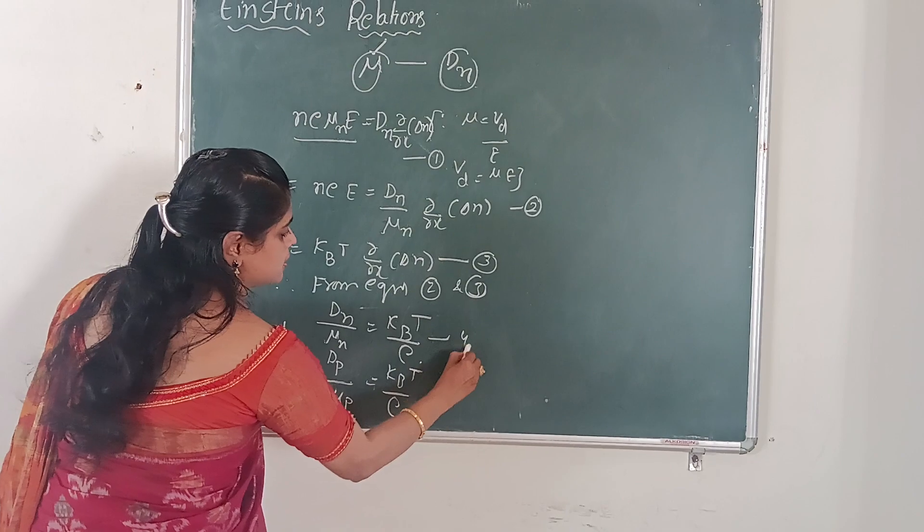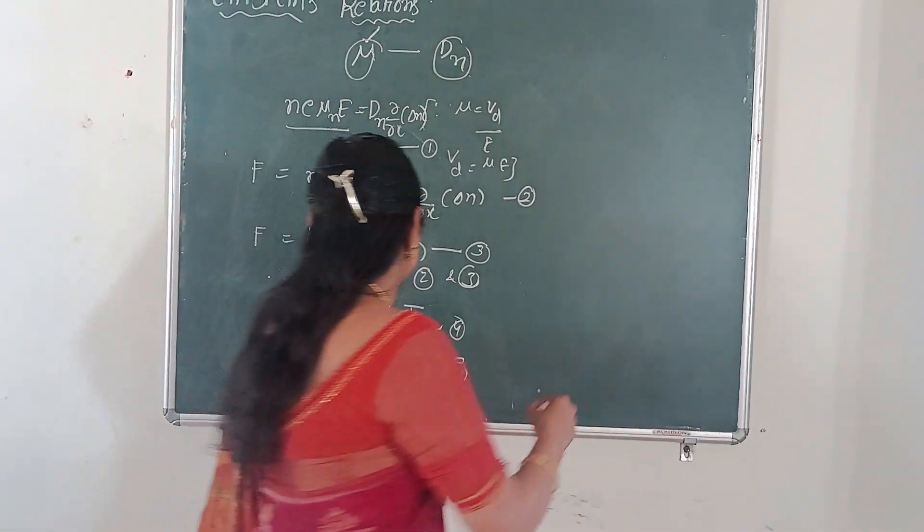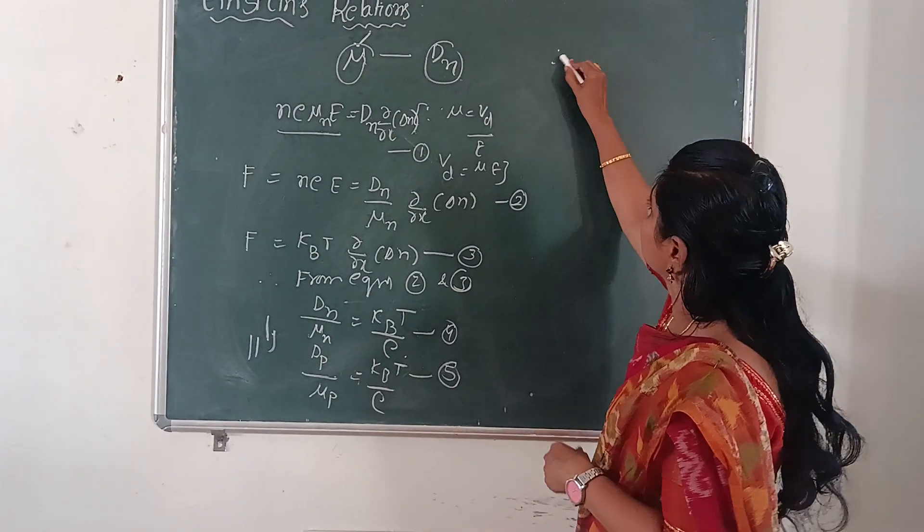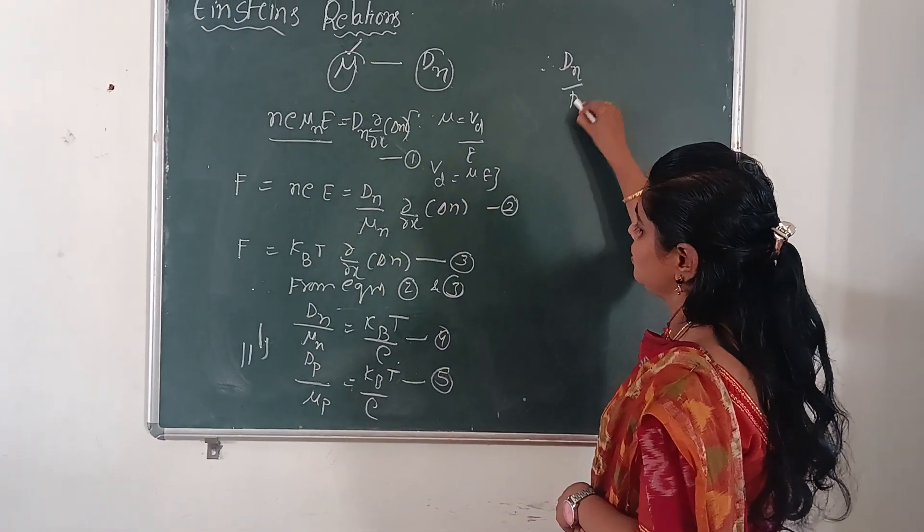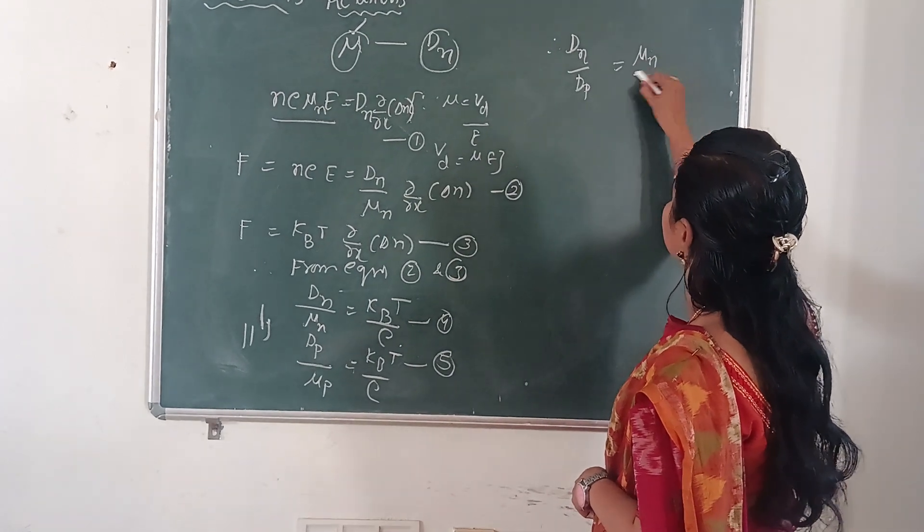So this is equation 4 and this is equation 5. So therefore, dn by dp equals to mu n by mu p.